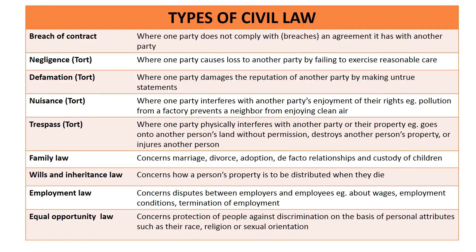The second learning intention requires you to be able to describe the different types of civil law. On this slide I've set out a number of different types of civil law. One of the major types of civil law is breach of contract — this is where one party does not comply with, that is breaches, an agreement that that party has with another party. Other major types of civil law are the torts of negligence, defamation, nuisance and trespass. Tort simply means a civil wrong.